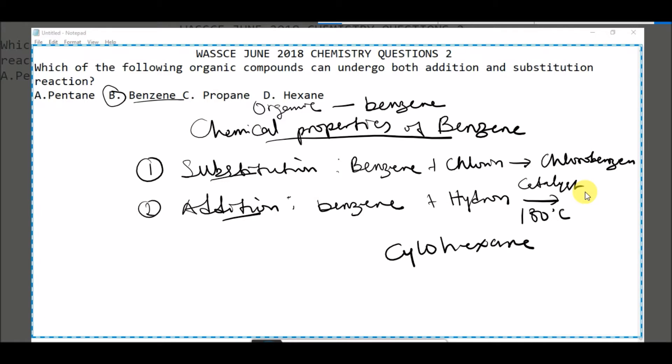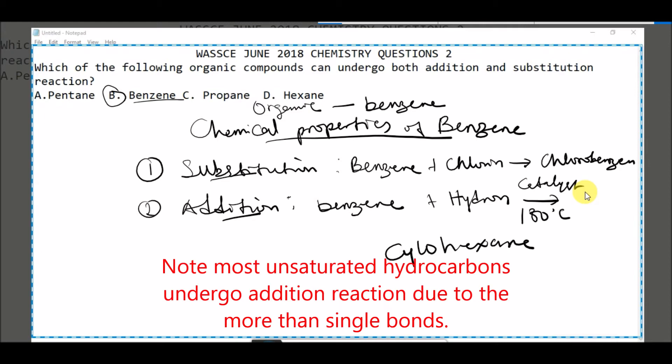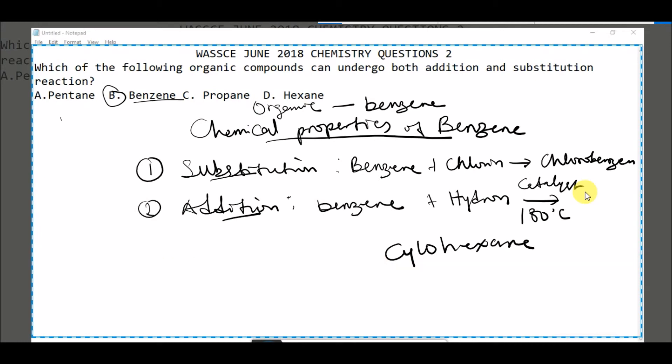So the answer is benzene. And why is it possible for benzene to undergo such reactions? Because, very importantly, benzene is an unsaturated hydrocarbon. So we have to take note of this.